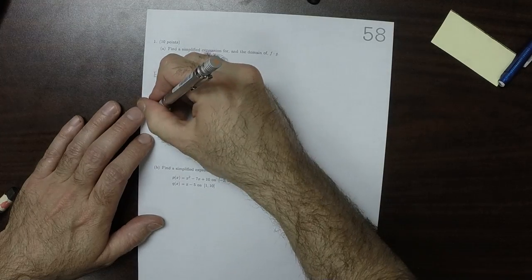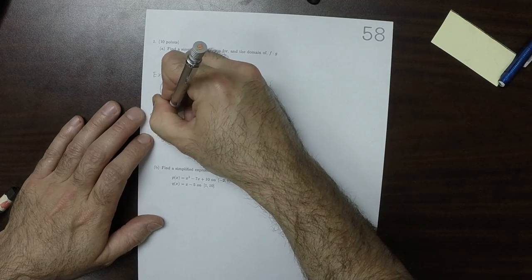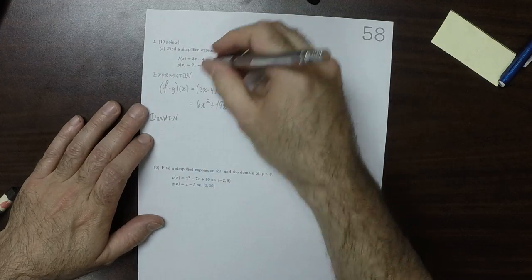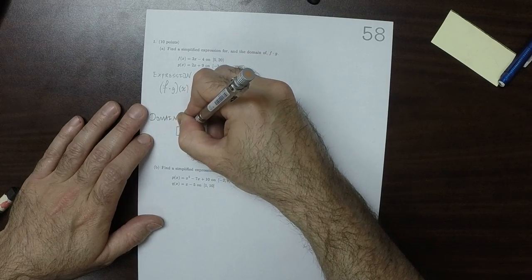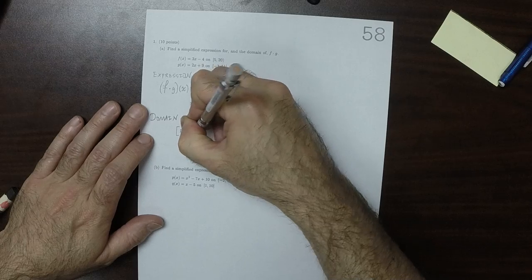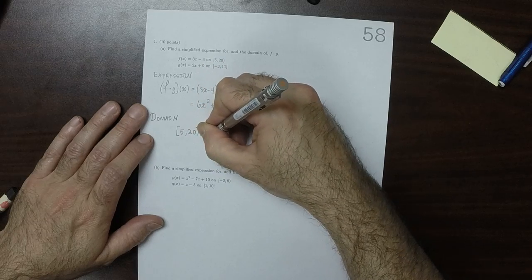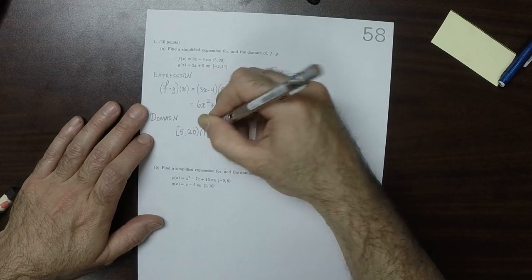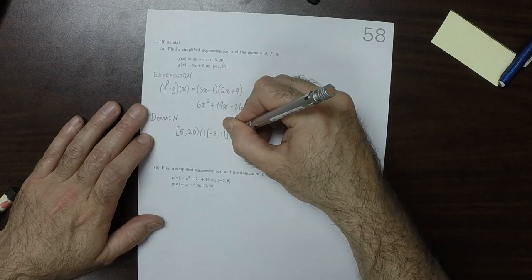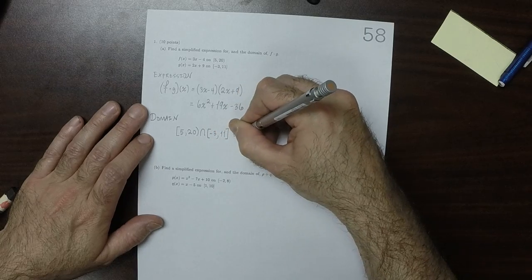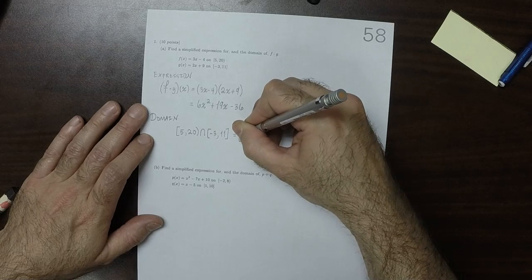As for the domain, the domain will be the intersection of those two. So 5 to 20 intersect negative 3 to 11, and that intersection is 5 to 11.